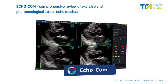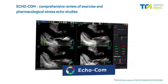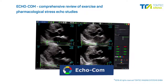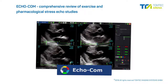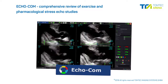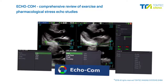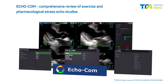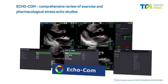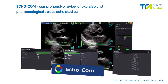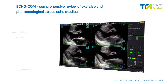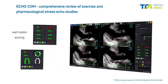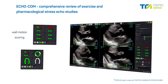ECHO-COM provides a comprehensive review of exercise and pharmacological stress echo studies. Automatically arranged stress echo loops by view or stage and the shuffle mode enable quick and intuitive image review. An easy-to-use wall motion scoring is used to document all findings.